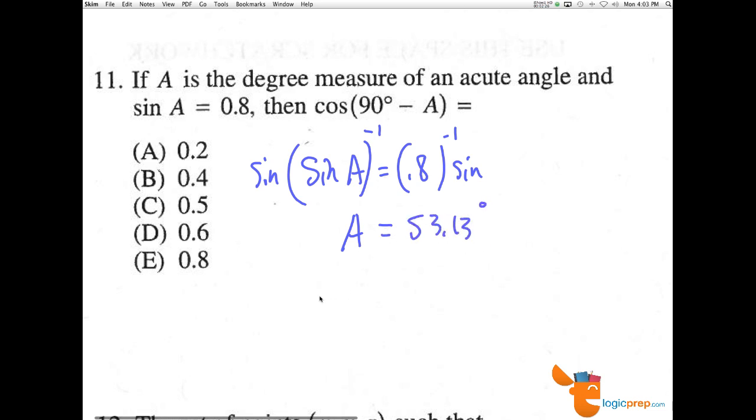this makes A equal approximately 53.13 degrees. And now I can plug this into here, the cosine of 90 minus A, which is 53.13 degrees. And when you plug this into your calculator, you're taking the cosine of 36.86, which you will find will also equal 0.8, like I said before.